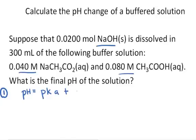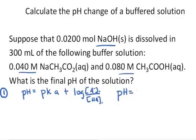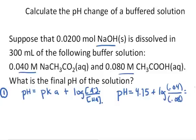The Henderson-Hasselbalch equation is: pH equals the pKa of the solution plus the log of the concentration of the anion of the acid divided by the concentration of the acid. The pKa I can look up or calculate from Ka to be 4.75, plus the log of the concentration of the salt, which is 0.04, divided by the concentration of the acid, which is 0.08. So before any added sodium hydroxide, the pH is 4.45.